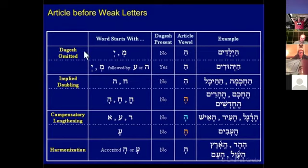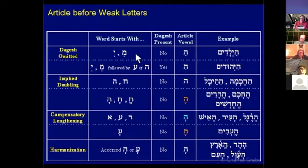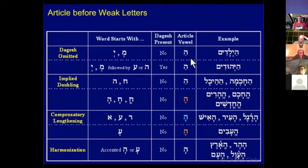Dagesh is omitted in the case of a Maim or a Yud — only two of the coalmine letters. If they are followed by a vocal Shiva, they will drop the dagesh. The vowel under the article stays the same — the normal Ha with the Patach. For example, Yiladim means children; it starts with a Yud. You put the article on — the He and the Patach — and we would expect the Yud to be doubled, but in fact it isn't.